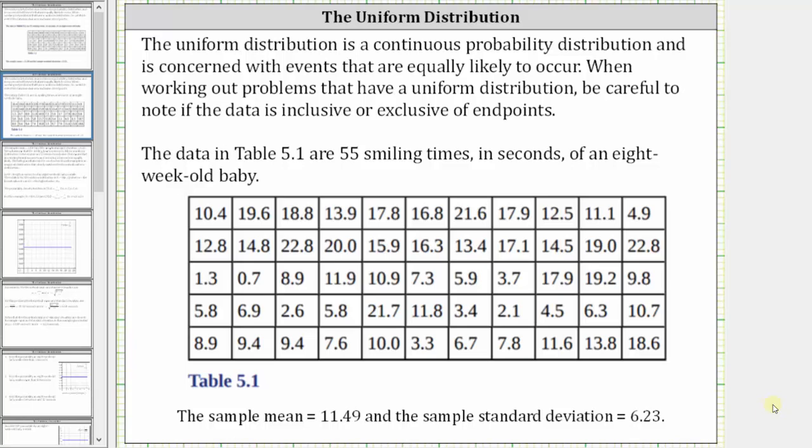The data in table 5.1 are 55 smiling times in seconds of an eight-week-old baby. The sample mean is equal to 11.49 and the sample standard deviation is equal to 6.23.